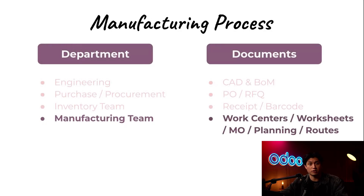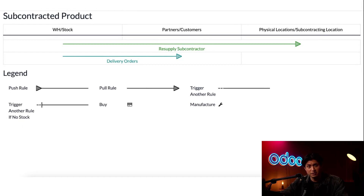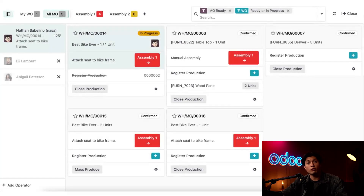Raw materials are consumed, recorded, and finished products are produced. In cases where production is outsourced to subcontractors — say for specialized parts or overflow demand — Odoo can handle that too. The database tracks where the product is, which subcontractor has it, and how long to expect before that part is built and returned.